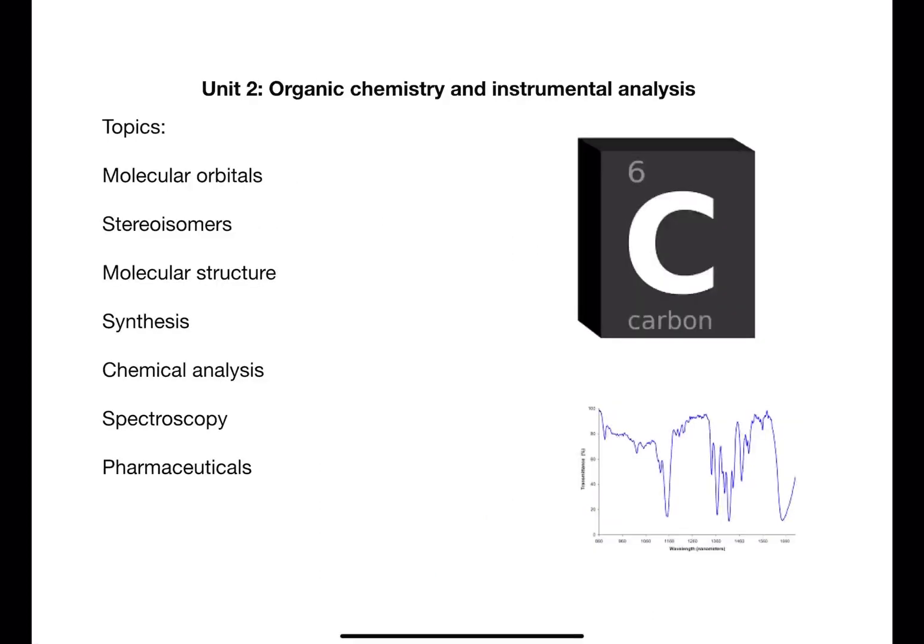Unit 2 is organic chemistry and instrumental analysis. Organic chemistry is a study of substances that are carbon based and is extremely important for the chemistry of life. Instrumental analysis is used to determine the structure of compounds. The unit looks at molecular orbitals, which links back to previous knowledge on bonding and helps to explain why some things bond and why others don't.